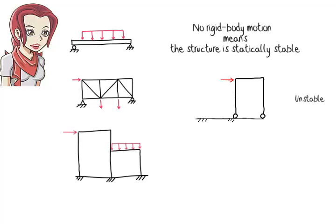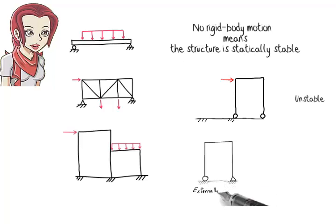If, however, we replaced one of the rollers with a pin support, the structure becomes externally stable, as the pin prevents the rolling of the frame on the support surface. Let's consider another example.